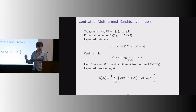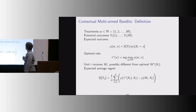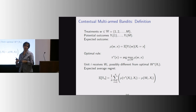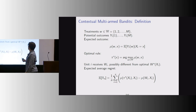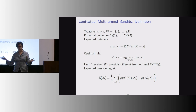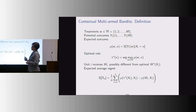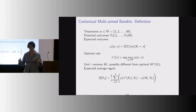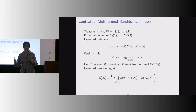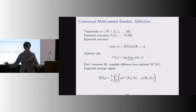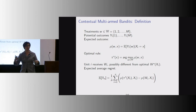Let me set up what the problem looks like. We can think of there being M arms — different treatment arms, like different emails to send people or different ways to convince people to save for charity. Each person has a potential outcome with each of the possible arms, and that can depend on covariates. What makes this especially hard is that if I want to do it in a personalized way, I'm trying to learn a function — not just which arm is better on average, but a mapping from people's characteristics to the best arm. That's a fully nonparametric function of multiple covariates and multiple arms.